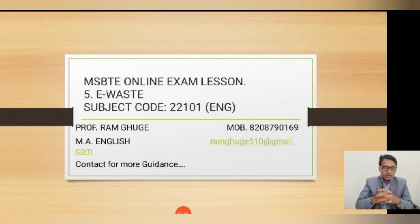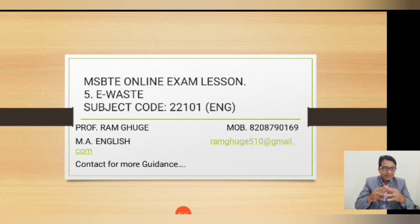E-waste means electronic waste, so we will be discussing almost eight to ten MCQs on this particular lesson. This is strictly as per the pattern of the online examination set by Maharashtra State Board of Technical Education. Without wasting any time, I will start with the PPT and MCQs. We are going to discuss electronic waste MCQs as per the pattern of MSBTE's online examination. The subject is English, subject code 22101.